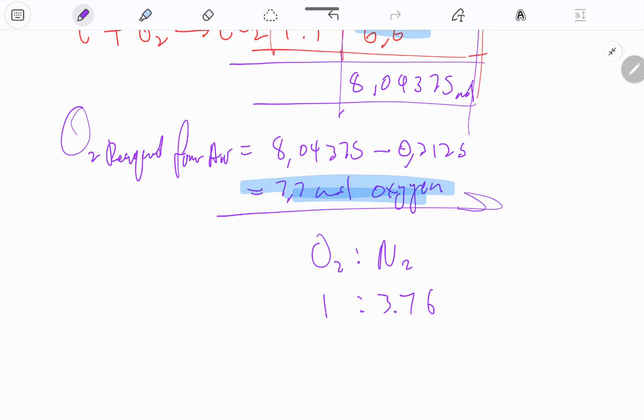Because we're already getting some from the coal itself. Now we know our ratio: for every one oxygen, we get 3.76 nitrogen. So if we have 7.7 moles of oxygen, that means we're going to have 7.7 times 3.76 moles of nitrogen.